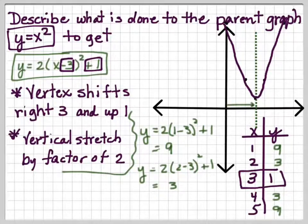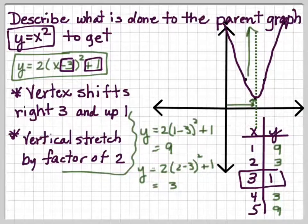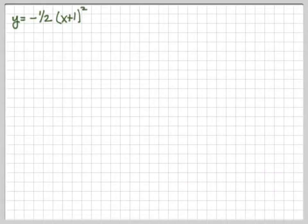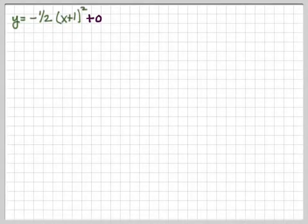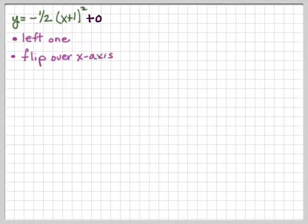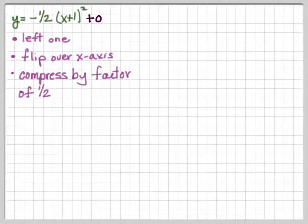Notice that the vertex moved 3 to the right and up 1, and the parabola stretched upwards. Now let's look at y = -½(x + 1)². How would we graph that? Let's describe it first: there's nothing to move the graph up or down, so we can imagine a plus 0 there. It's going to shift left 1, flip over the x-axis because of the negative sign, and compress by a factor of ½.